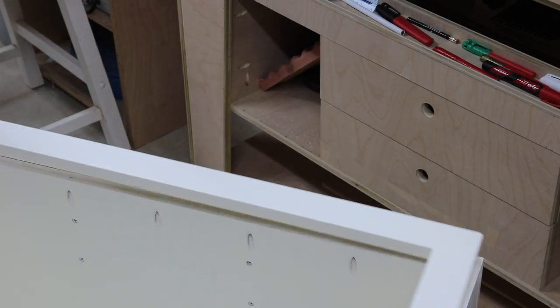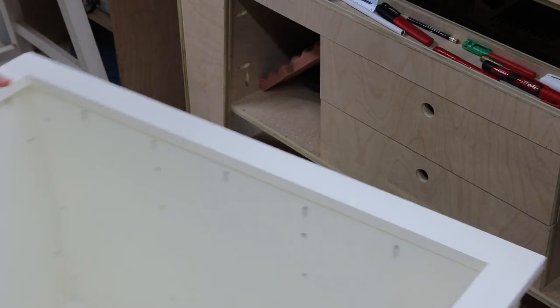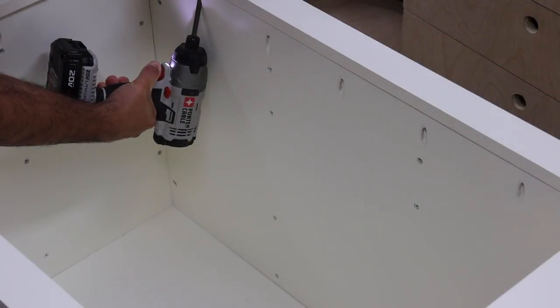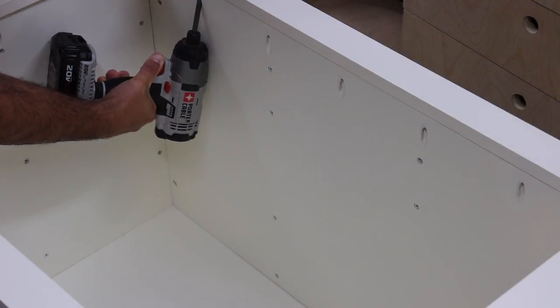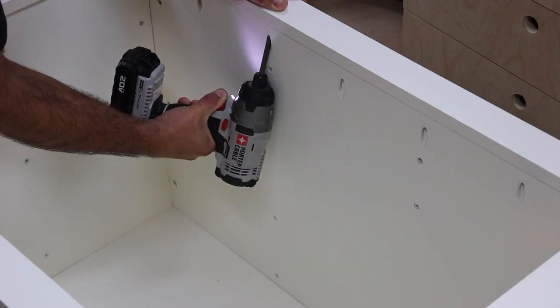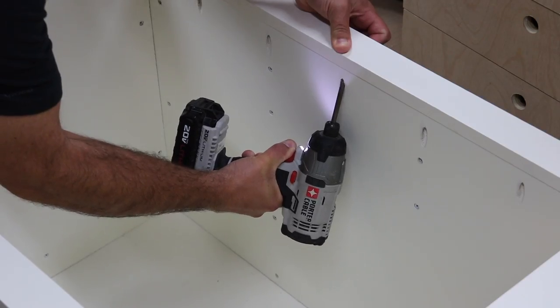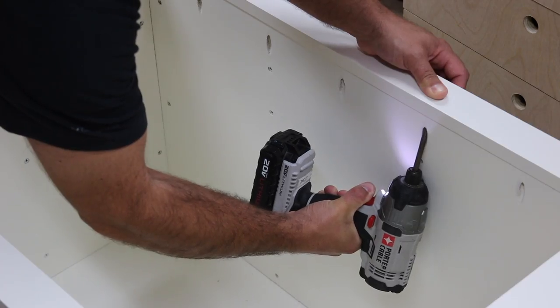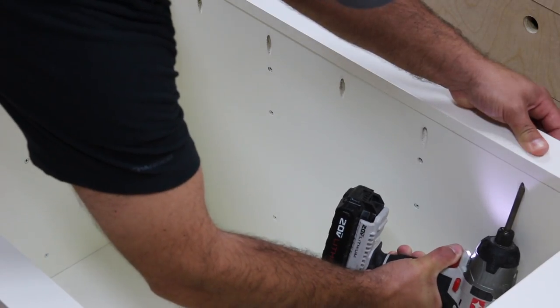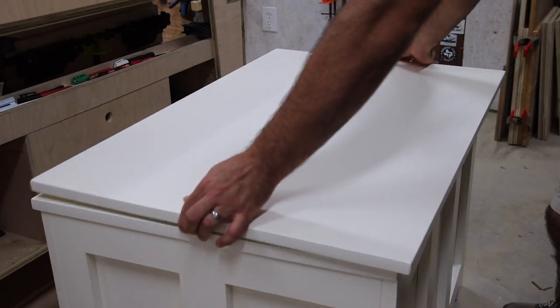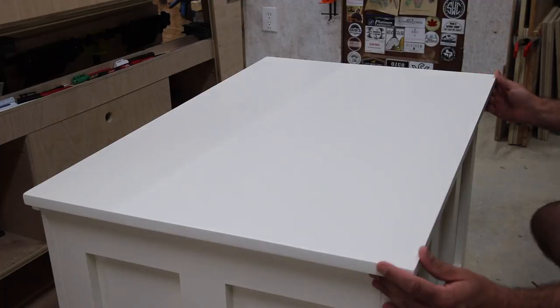We're going to install this frame over the top of the chest here. This is going to cover up all the plywood and just give it a nice finished lid appearance. This is the top, and the top will go on.